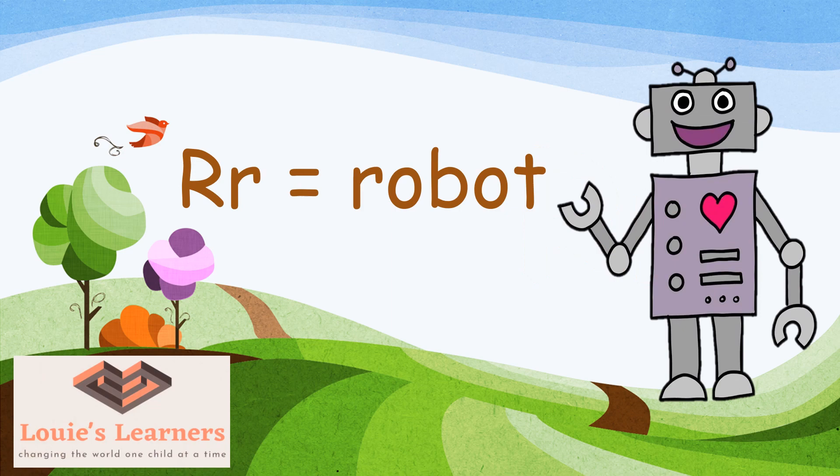So don't forget, our keyword for the letter R is robot. R says R for robot. Excellent.